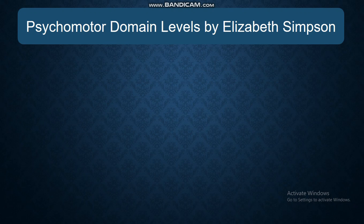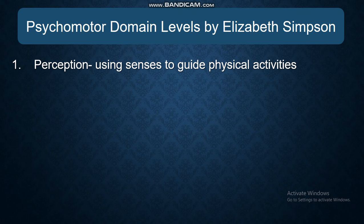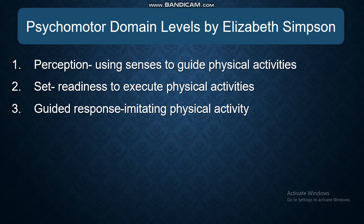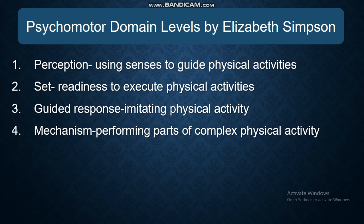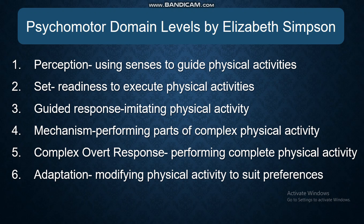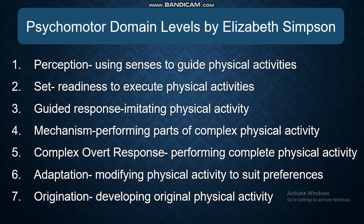Psychomotor Domain levels by Elizabeth Simpson. Perception — using senses to guide physical activities. Set — readiness to execute physical activities. Guided Response — imitating physical activity. Mechanism — performing parts of a complex physical activity. Complex Overt Response — performing a complete physical activity. Adaptation — modifying physical activity to suit preferences. Origination — developing original physical activity.